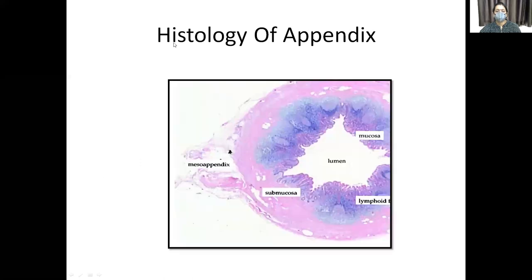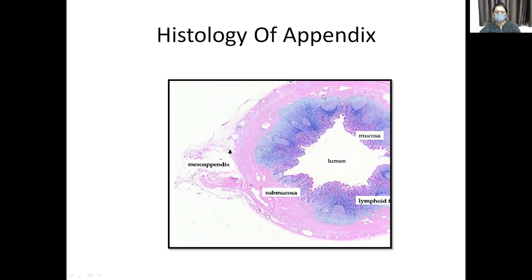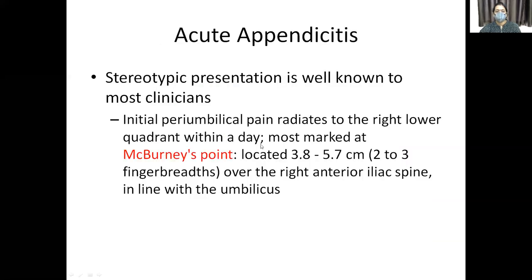The appendix is a finger-shaped structure, so on transverse section we see a lumen. The mucosa is lined by columnar epithelium with lymphoid aggregates in the lamina propria, then the submucosa, followed by the muscular layer (circular and longitudinal), and then the serosa.